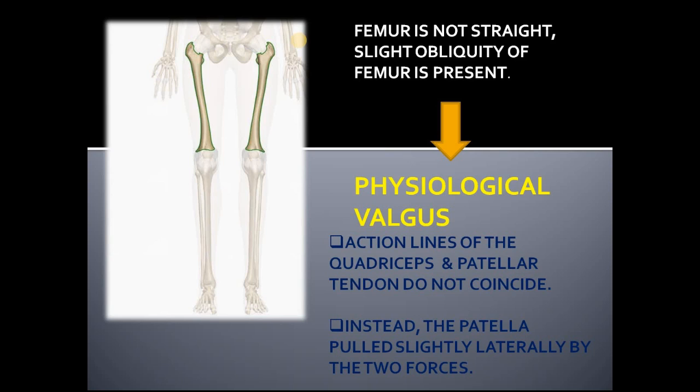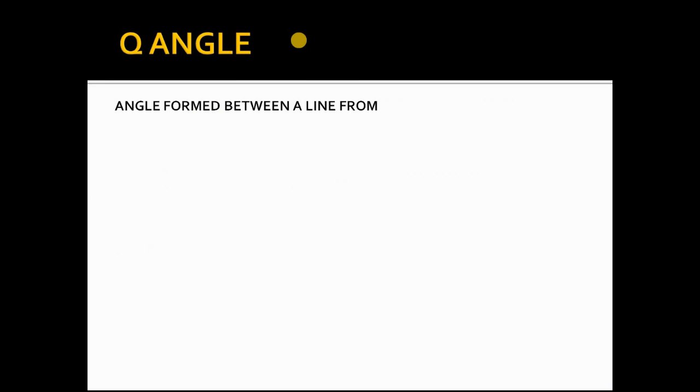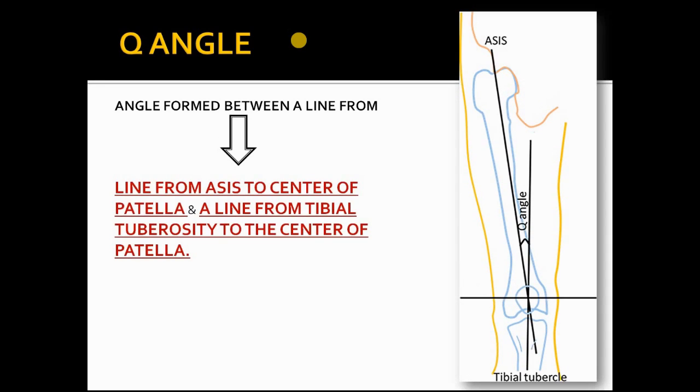So the action lines of the quadriceps and the patellar tendon do not coincide. Instead, the patella is pulled slightly laterally by these two forces. Now let's talk about Q-angle. It is an angle which is formed between a line from ASIS to the center of patella and a line from tibial tuberosity to the center of patella.